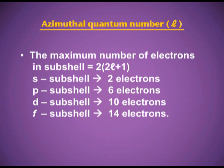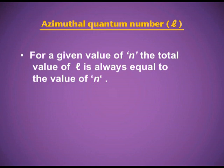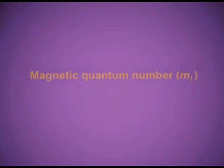The maximum number of electrons in a subshell is given by the formula 2(2l + 1). The s subshell can accommodate a maximum of 2 electrons, p can accommodate 6, d can accommodate 10, and f can accommodate 14. For a given value of n, the total number of values of l is always equal to n.